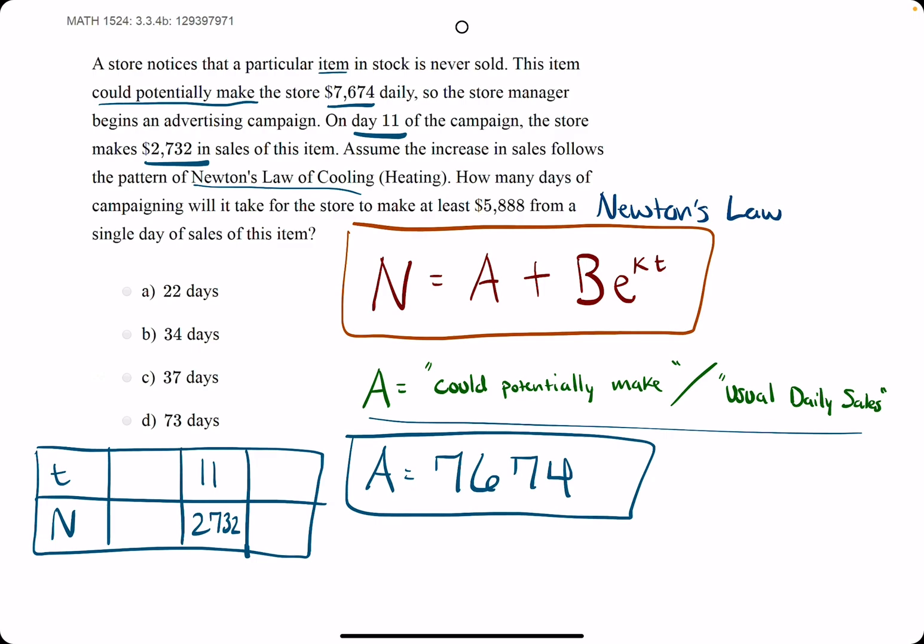Because they say the item is never sold at the beginning—before the campaign or at the start of the campaign—at time zero, the item is never sold, meaning it makes them zero dollars or zero sales. They ask how many days, so we're looking for a T value we don't know.